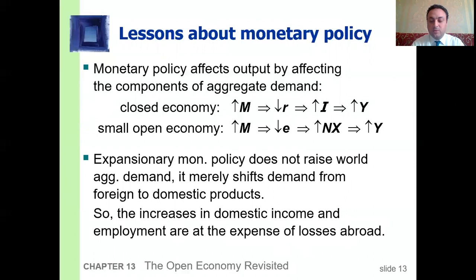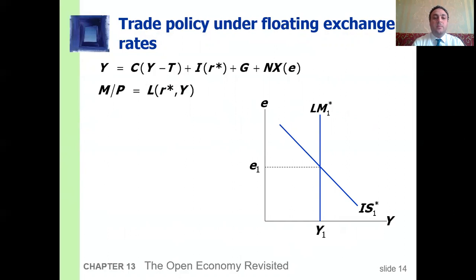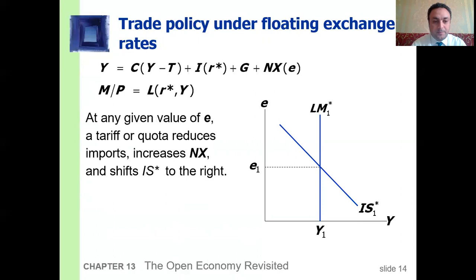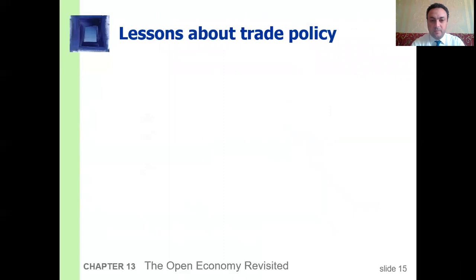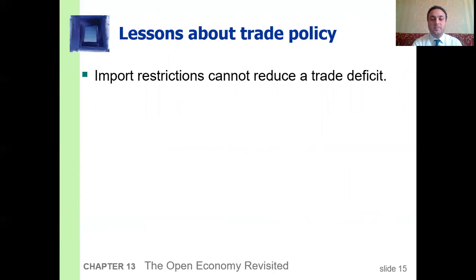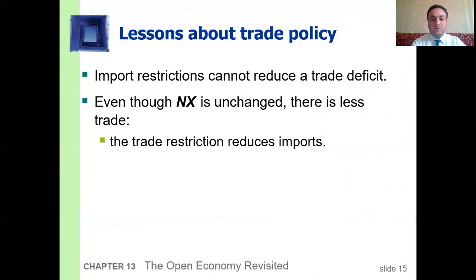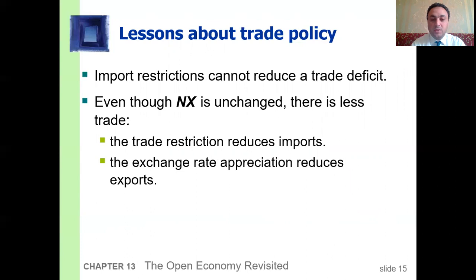Trade policy under the floating exchange rate: at any given value of the nominal exchange rate, a tariff or quota reduces imports and increases net exports, shifting the IS curve to the right. The result is an increase in the nominal exchange rate while output does not increase. Import restrictions like tariffs and quotas cannot reduce a trade deficit. Even though net exports are unchanged, there is less trade, as the trade restriction reduces imports while exchange rate appreciation reduces exports — so less trade means fewer gains from trade.